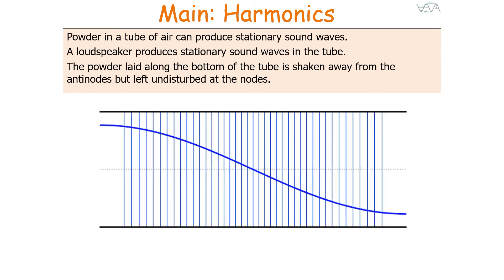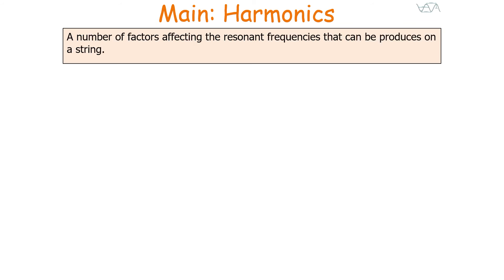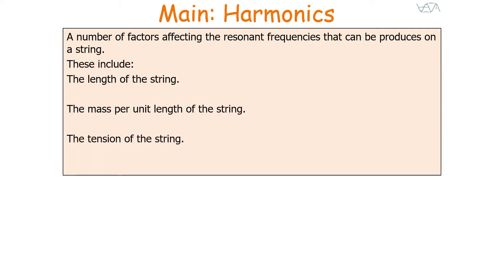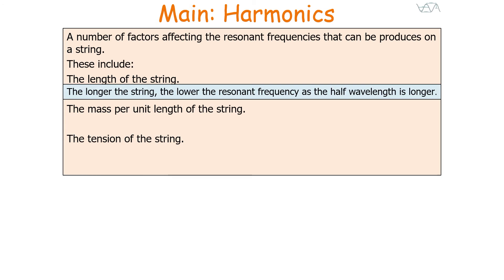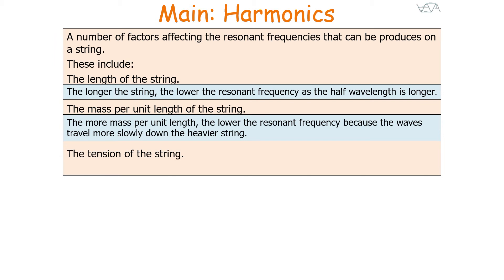There are a number of factors that affect the resonance frequencies that can be produced on a string. These include the length of the string, the mass per unit length, and the tension of the string. The longer the string, the lower the resonant frequency, because the half wavelength needed is longer. The more the mass per unit length, the lower the resonant frequency will be, because the wave travels more slowly down the string.